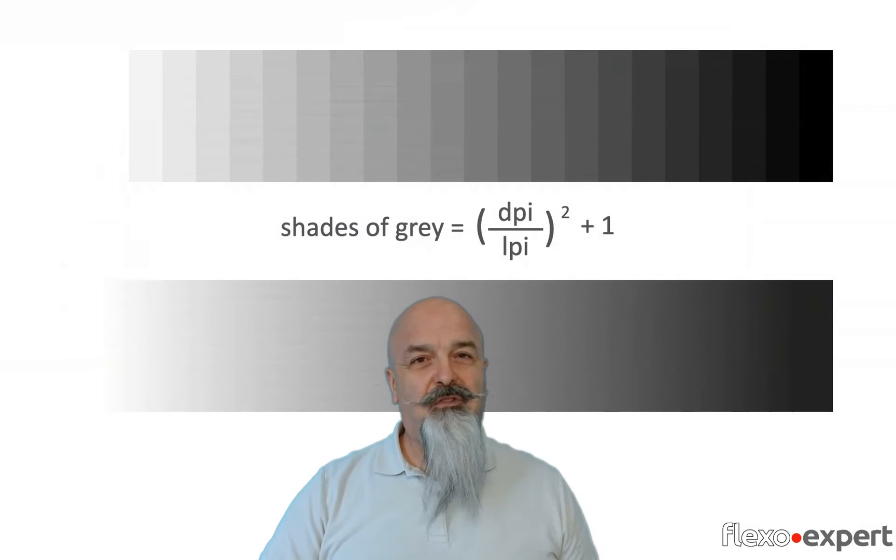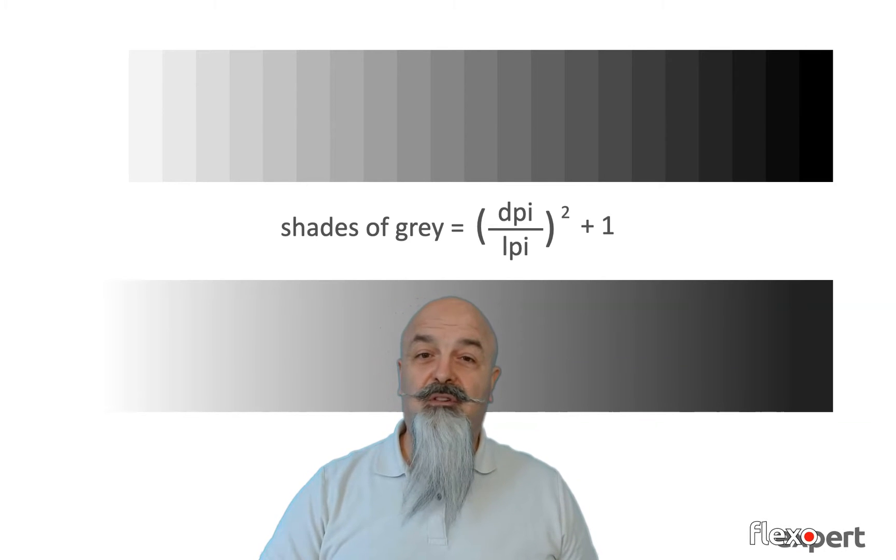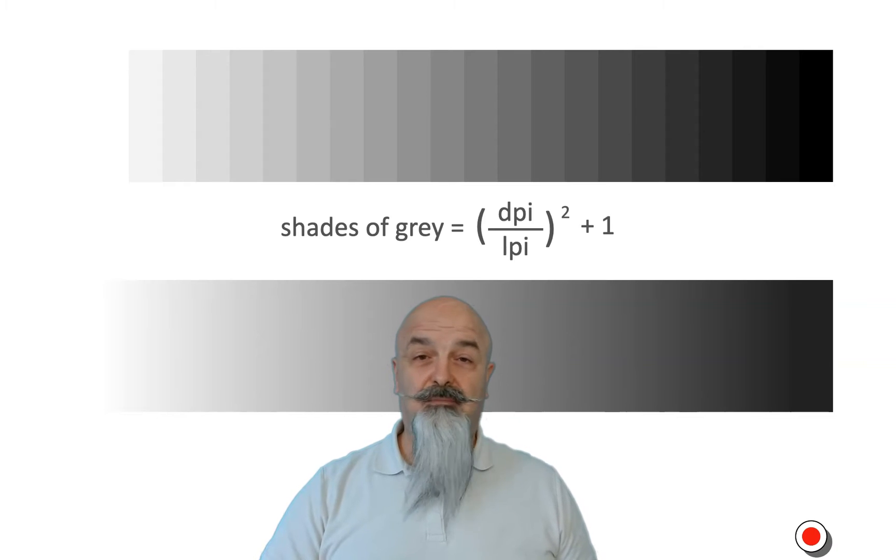Let's start from prepress because one of these defects known as bending is actually a prepress issue. The defect is visible on vignettes when a sufficient number of gray levels is not available to reproduce the fading. To calculate the levels of gray that are available at a given screen ruling and plate making imaging resolution, you can use the formula that you see on the screen.